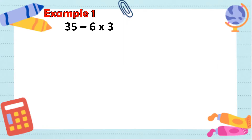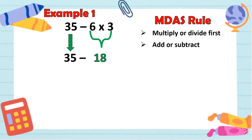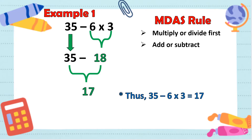Now, let's answer the equation 35 minus 6 times 3 gamit ang M-DAS rule. Tandaan: sa M-DAS rule, multiply or divide first. Walang division, so mag-multiply tayo. So, 6 times 3 is 18. Then, ibibring down natin ang 35 minus. Add or subtract — wala siyang addition, subtraction lang ang meron. So, 35 minus 18 is equal to 17. Thus, 35 minus 6 times 3 is 17.